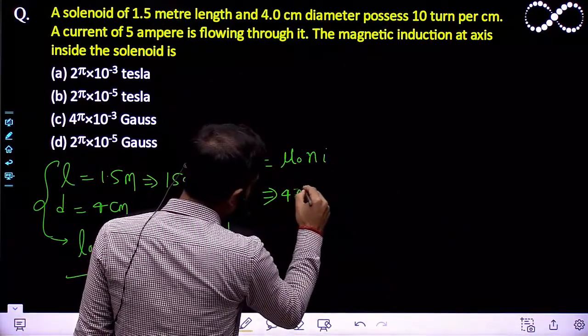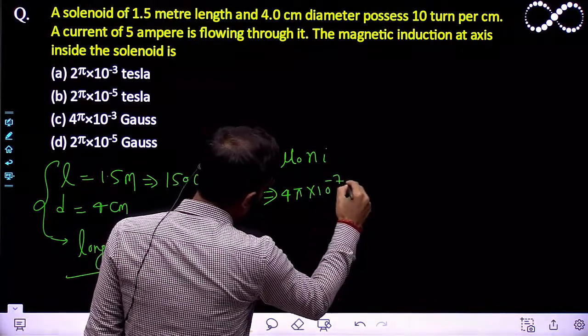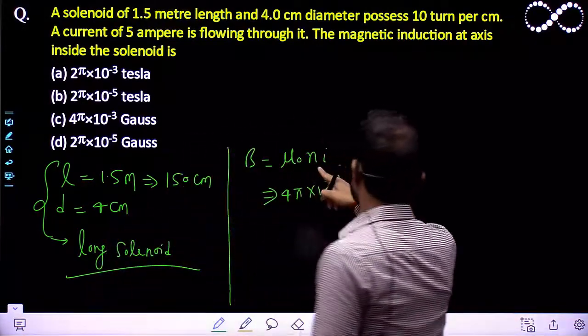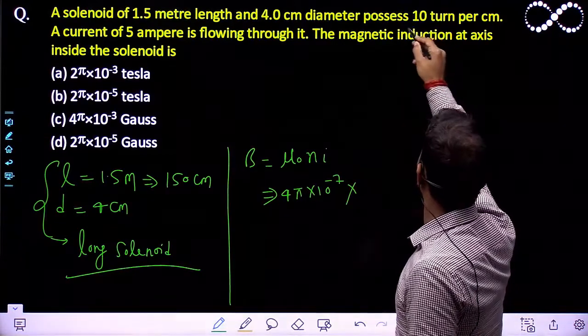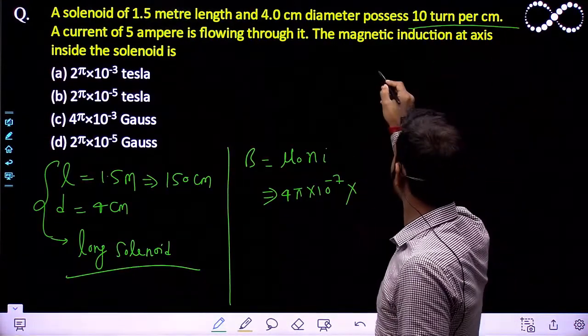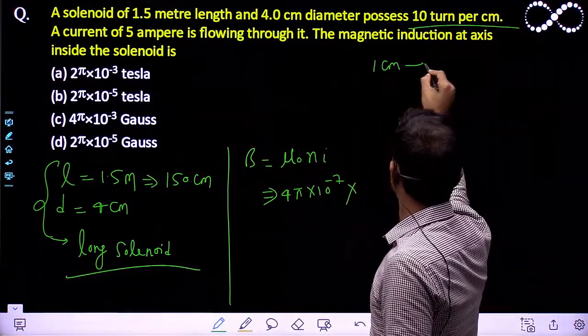The value of μ₀ is 4π × 10⁻⁷. Now it is saying N is the number of turns per unit length. The number of turns per unit length is given 10 turns per centimeter. In 1 centimeter the number of turns are 10.